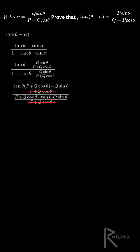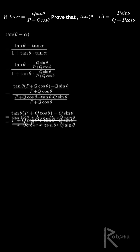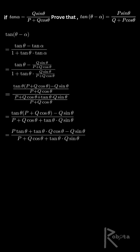Put each over the common denominator p plus q cos theta, and cancel it. In the numerator, we get tan theta times (p plus q cos theta) minus q sine theta. Expanding: p tan theta plus q cos theta times tan theta minus q sine theta. But q cos theta times tan theta is q sine theta, so those cancel, leaving just p times tan theta.